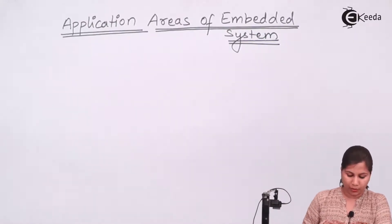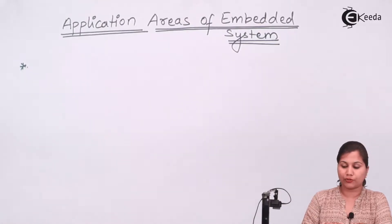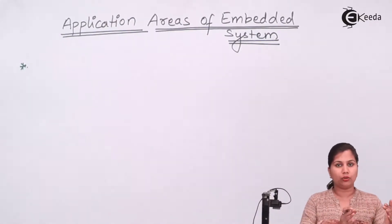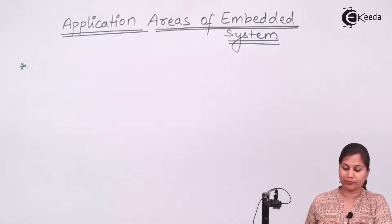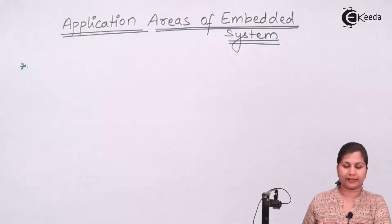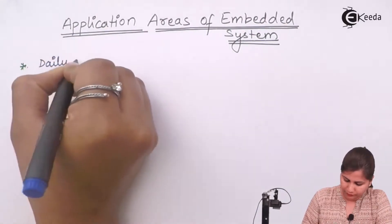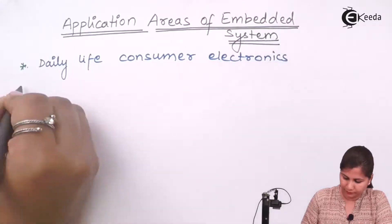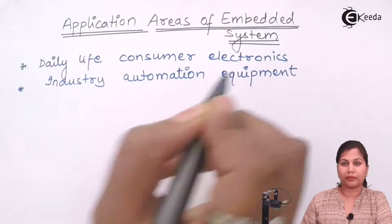Embedded systems have a huge variety of applications, from very low cost to very high cost systems. Their application areas differ from home appliances to industrial appliances. They are found in daily life consumer electronics, industry automation equipment, entertainment devices, academic equipment, medical instruments, and aerospace and weapon control systems.